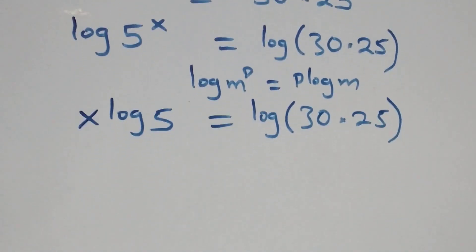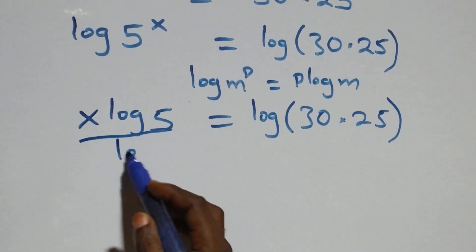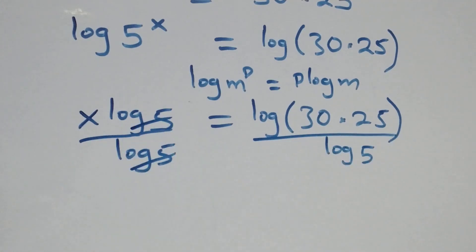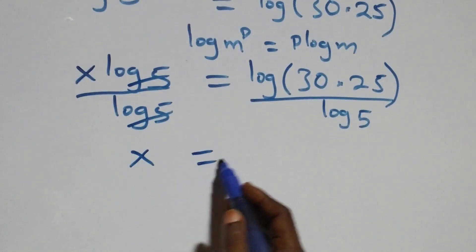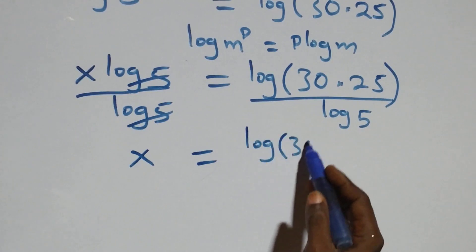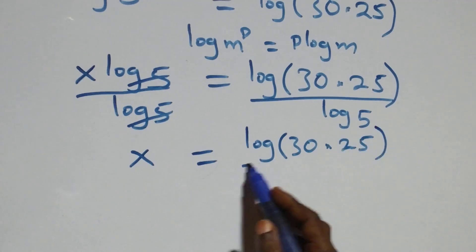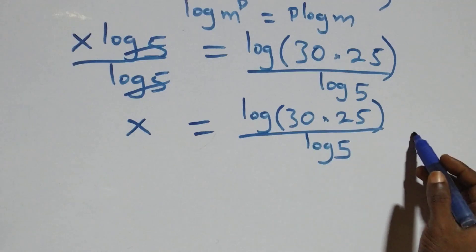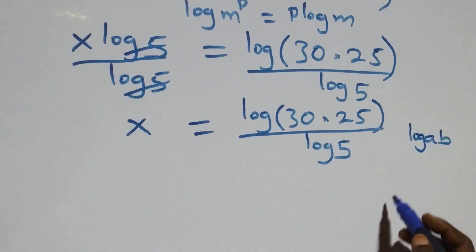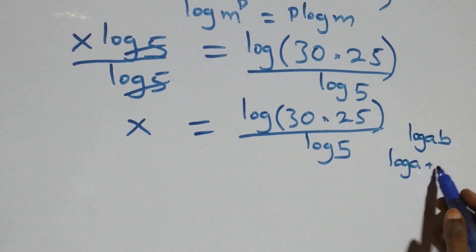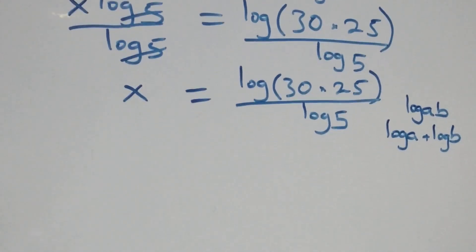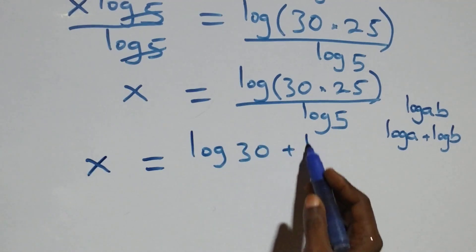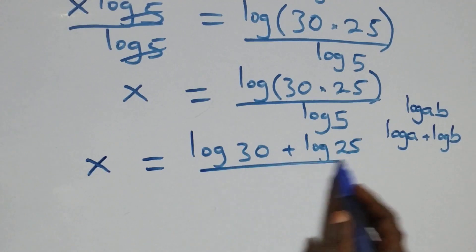We divide both sides by log 5. Log 5 cancels and we have x equals log(30 times 25) over log 5. By the law of logarithms, log(a times b) equals log a plus log b, so we can rewrite this as x equals log 30 plus log 25, all over log 5.